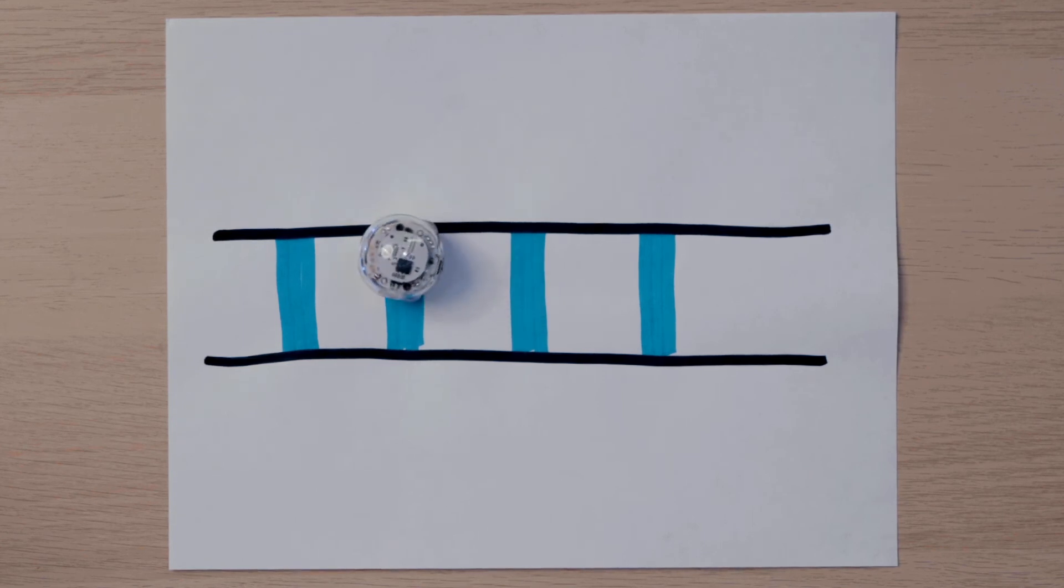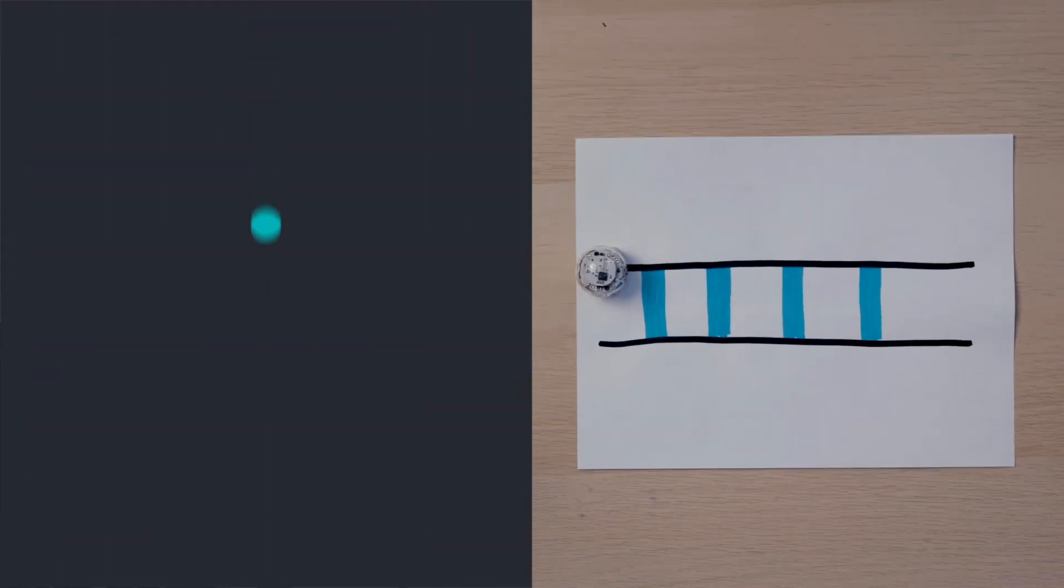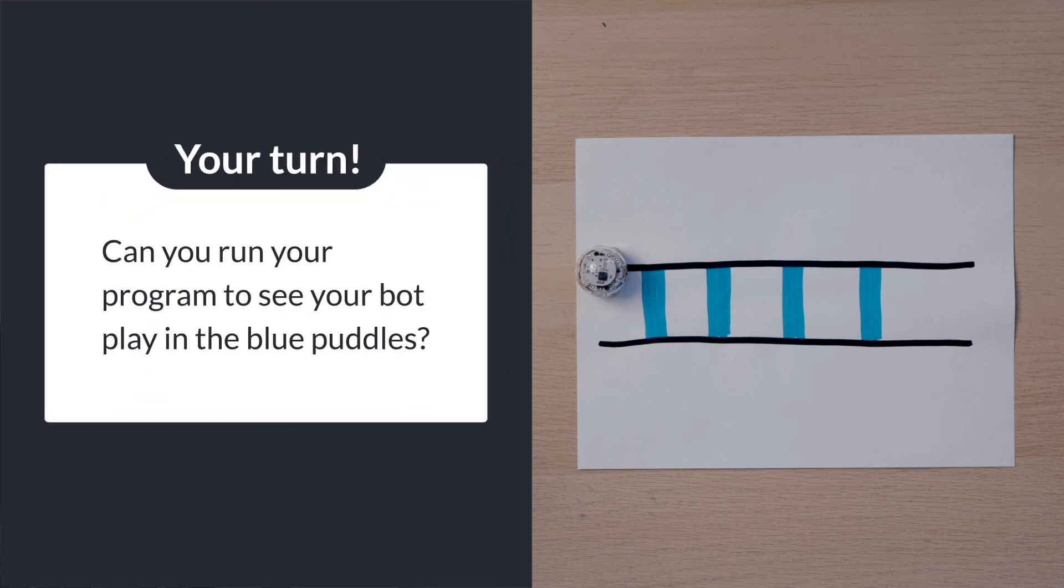I see the sequence of actions my bot performs based on the variable or color it senses on the pathway. When my bot senses the color blue, its lights turn blue, it spins and it moves forward one step. Can you run your program to see your bot play in the blue puddles?